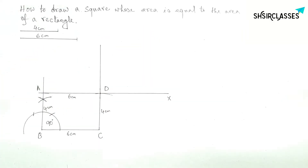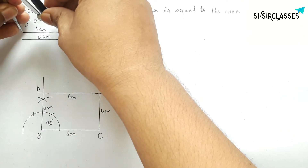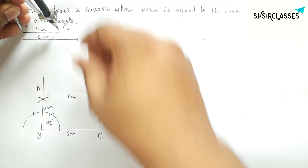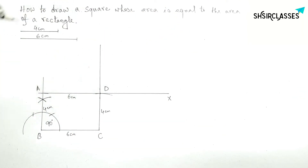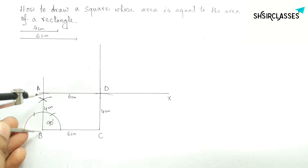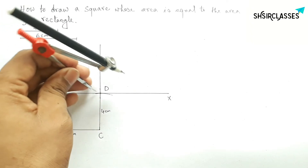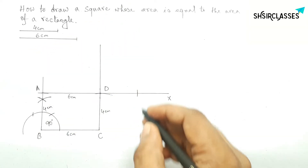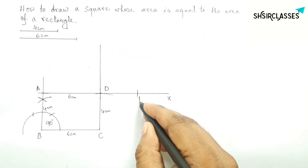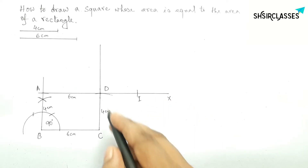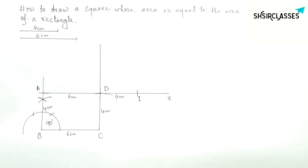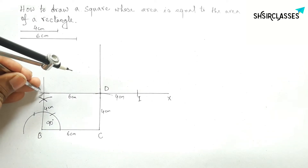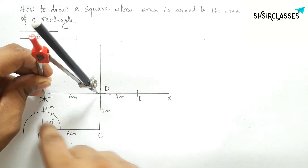Next, extending the line CD. Taking the length 4 centimeters — this is equal to AB and CD. Putting the compass on point D and cutting the line AX here, taking this point as I. So DI equals 4 centimeters.